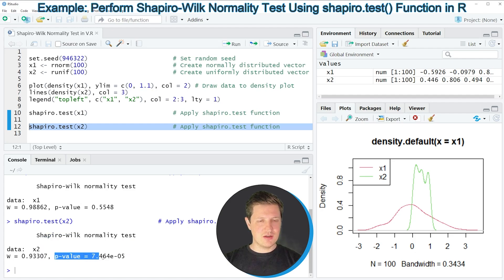As you can see, the p-value of this Shapiro test is much smaller than 0.05, and for that reason the results of our Shapiro test indicate that our second vector object is not normally distributed.